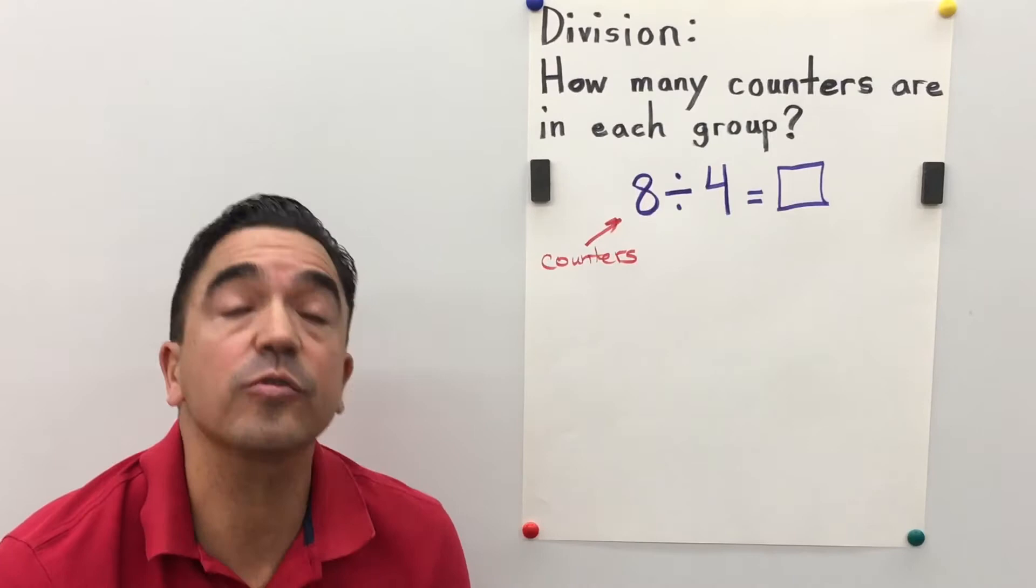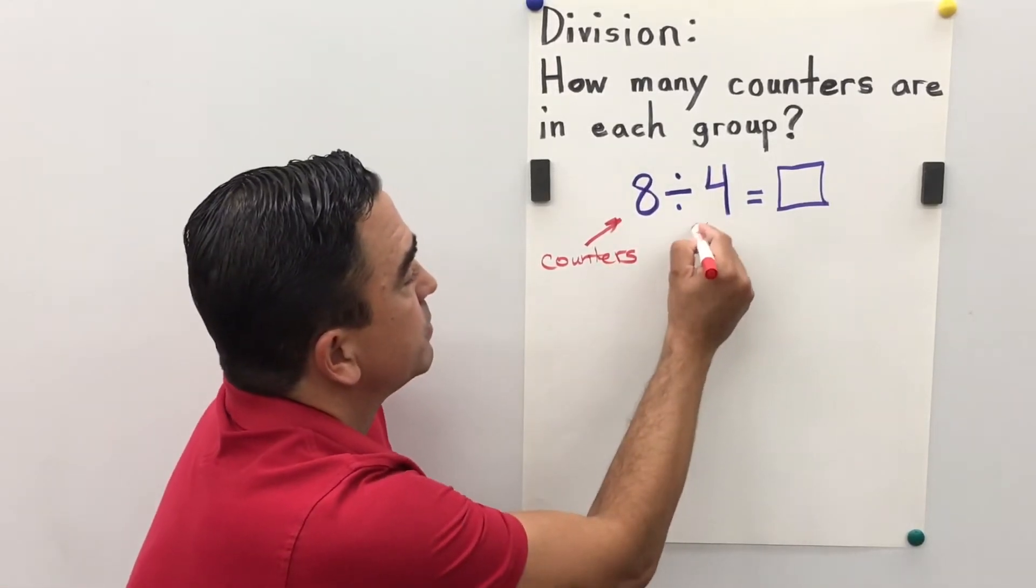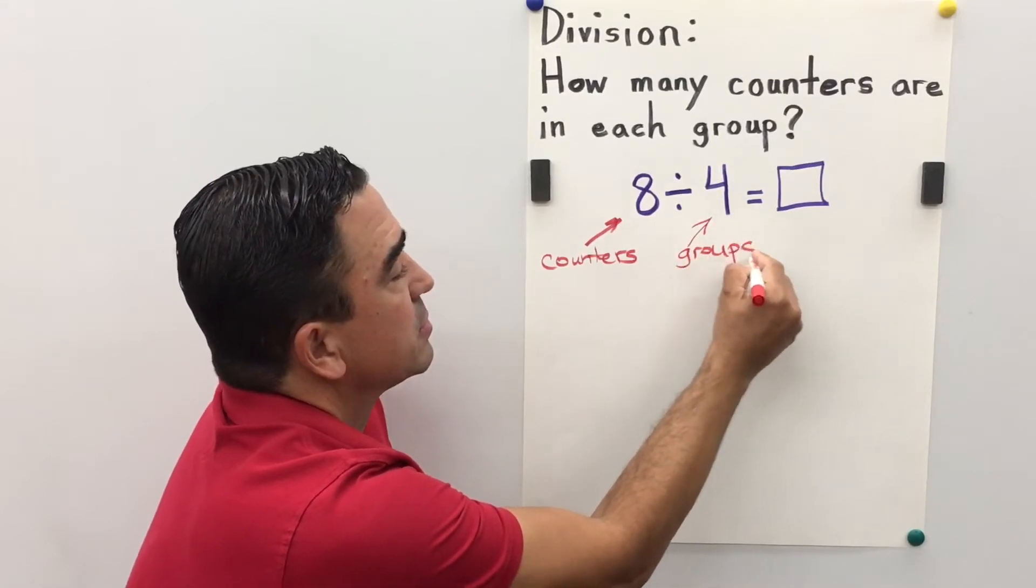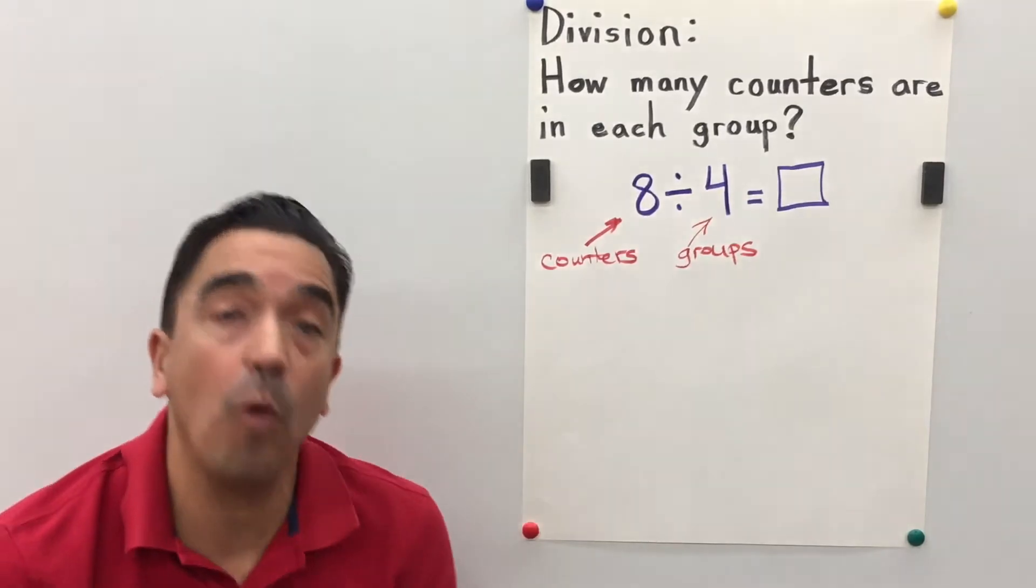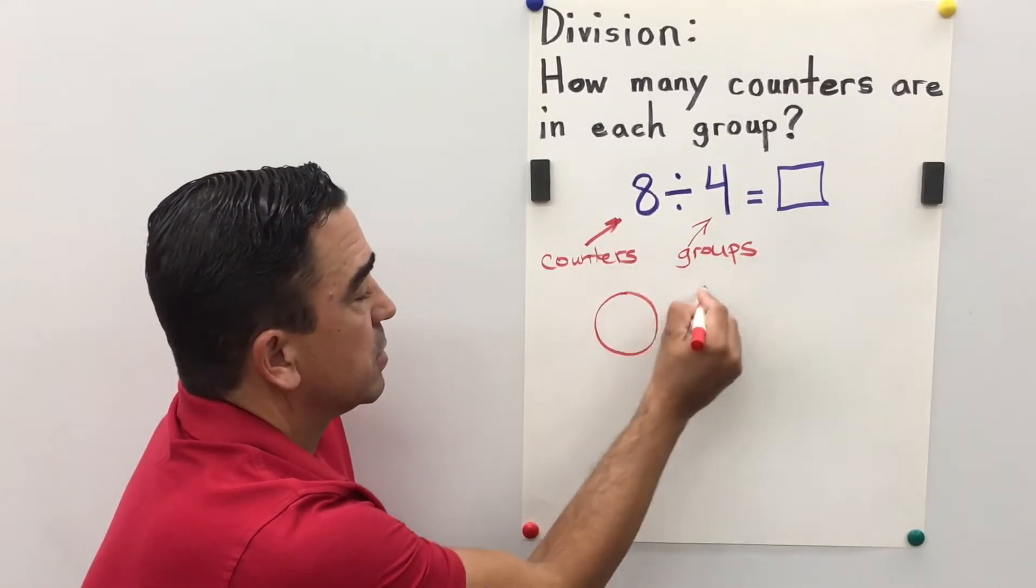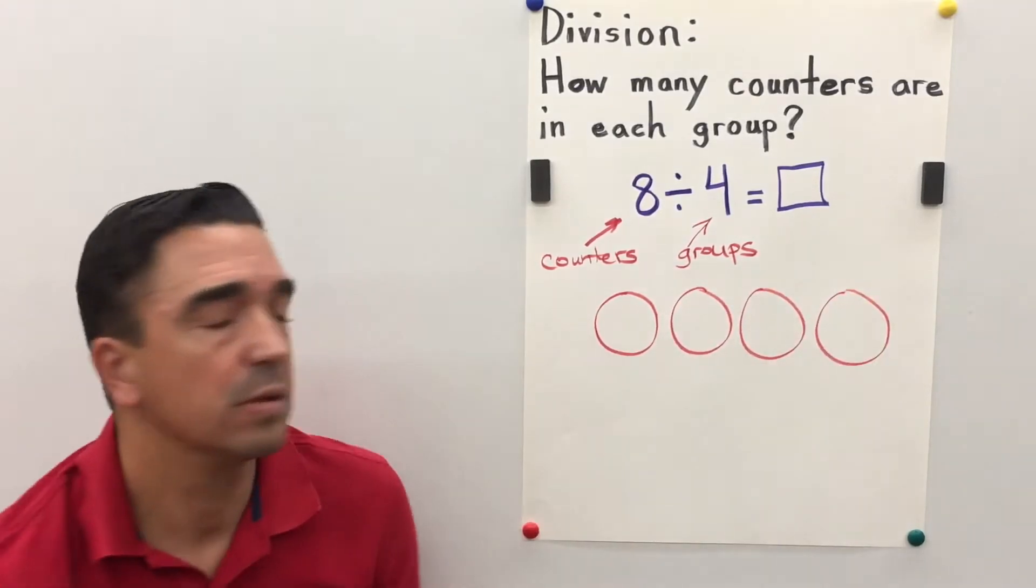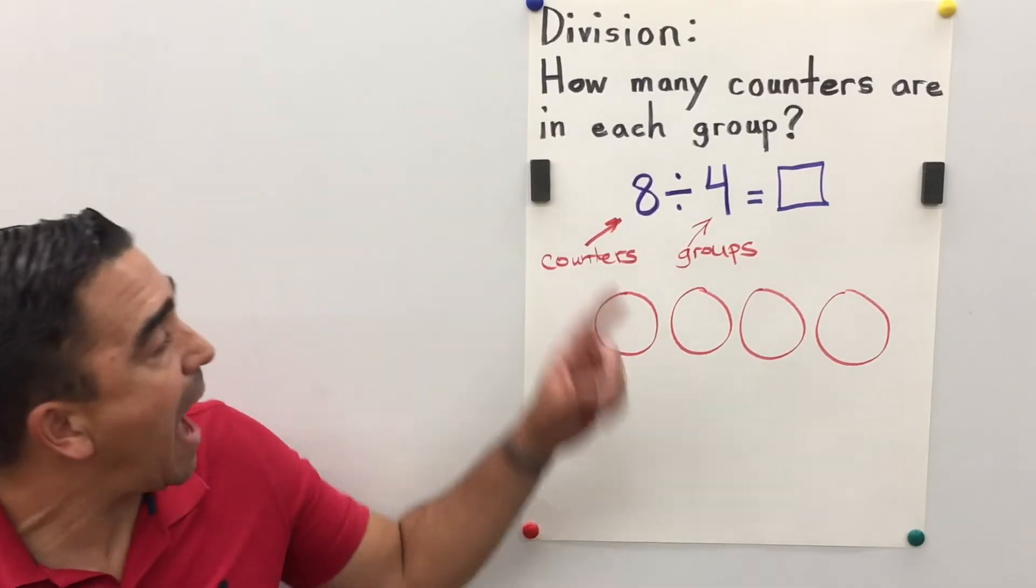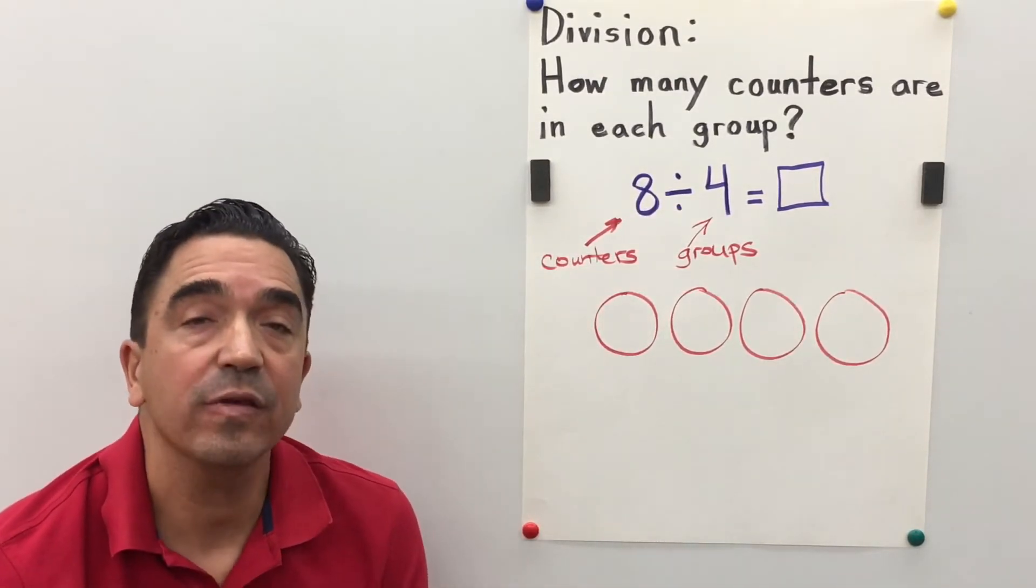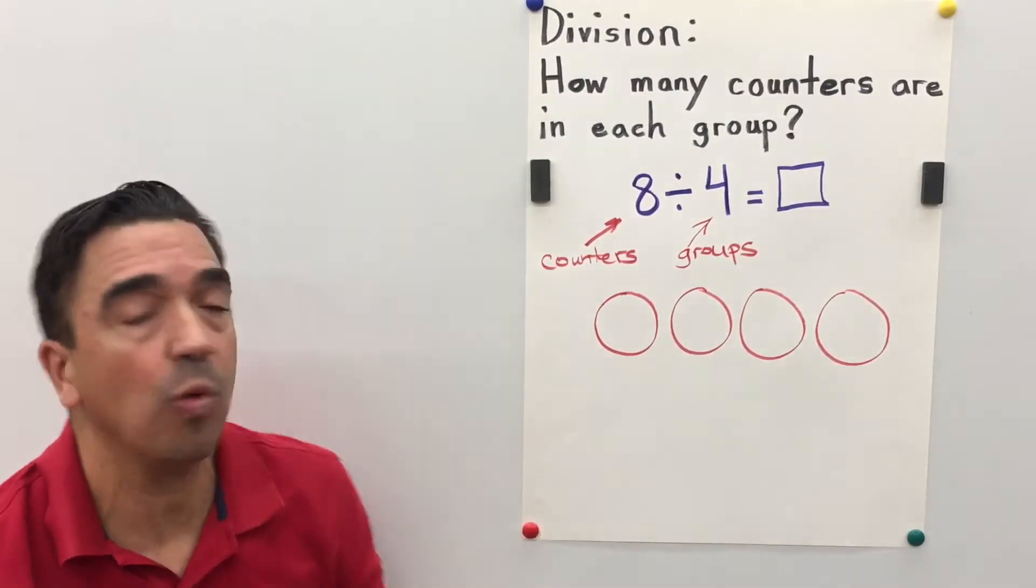The 4 is going to equal our groups. There are 4 groups. We are going to take our 8 counters and separate or partition them into our 4 groups.